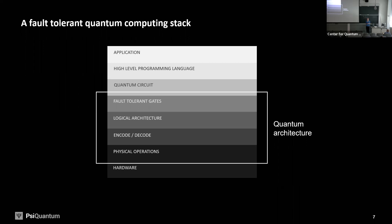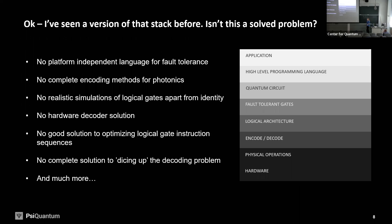Quantum architecture is really a design question. People have been designing computer architectures for conventional machines for many decades, and it's an enormous field. Many things go into it. The starting point is science — understanding the physics of topological error correction — but ultimately you're taking those things and making a whole bunch of design choices.